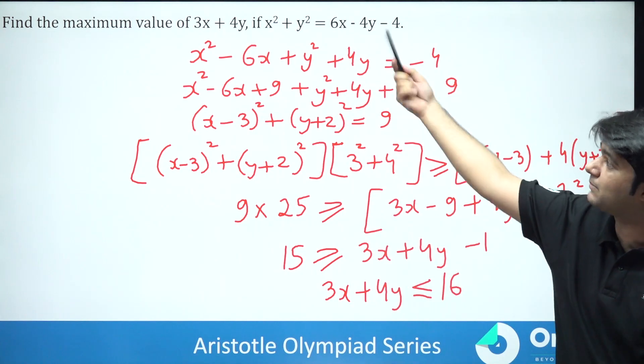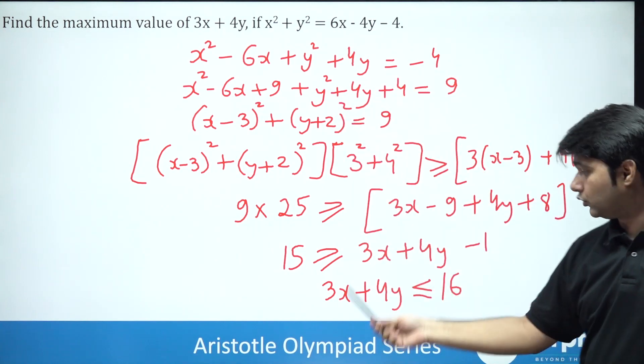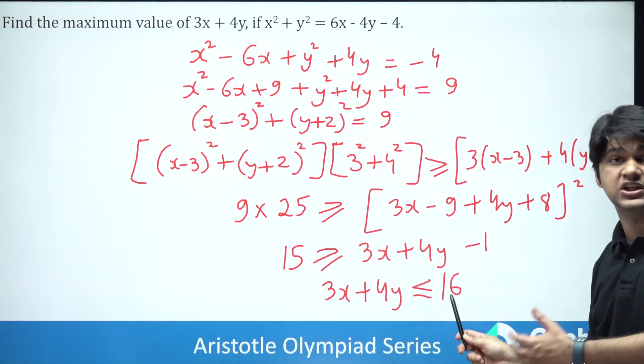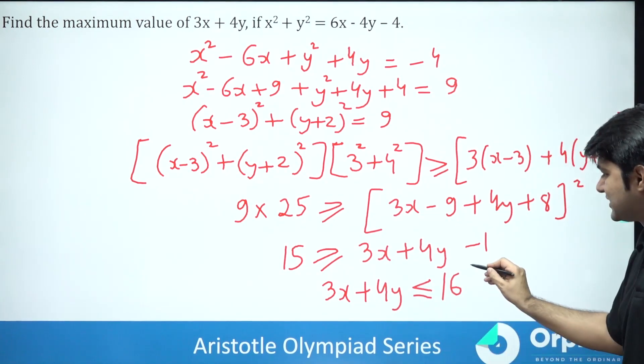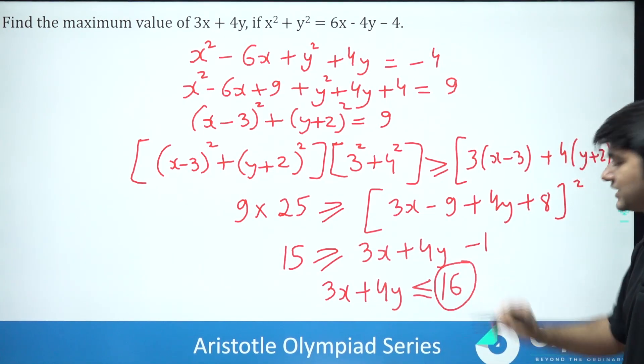Our question was to find the maximum value of 3x plus 4y. Now that 3x plus 4y has to be 16 or less, so the maximum value will become 16 itself.